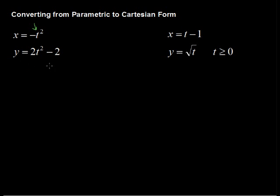So in this set of parametric equations, what we want to do is solve each of these equations for t, or in this case for t squared, and then set those resulting equations equal to each other. Let me show you what I mean.